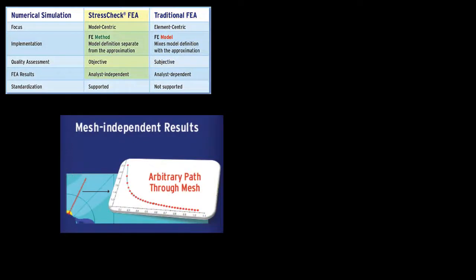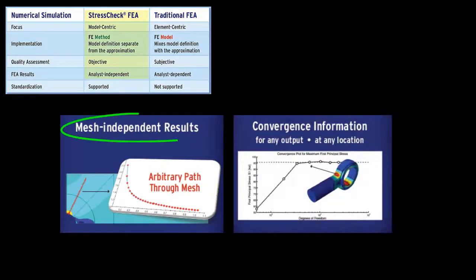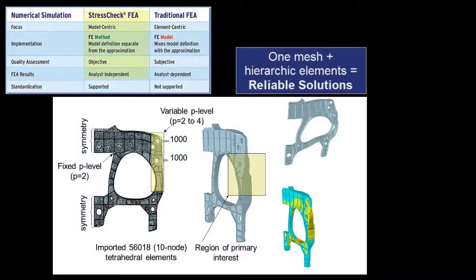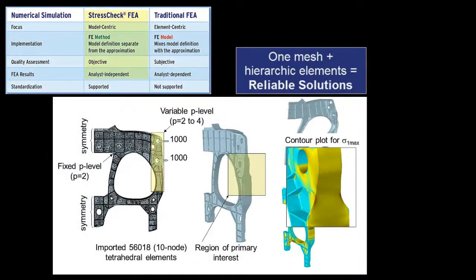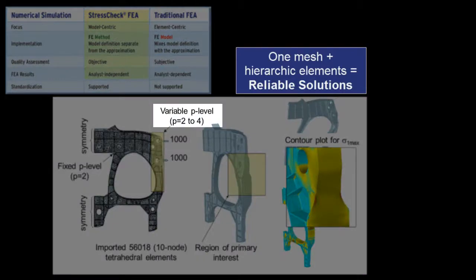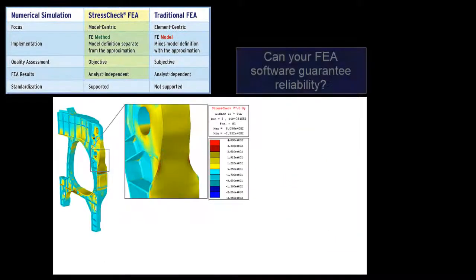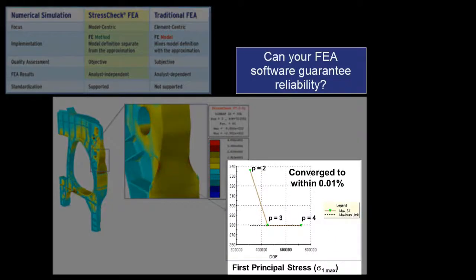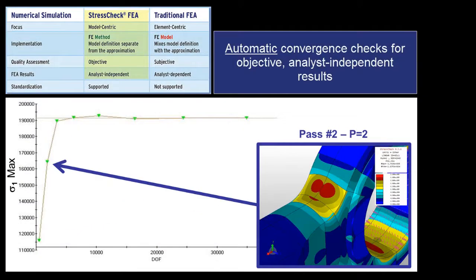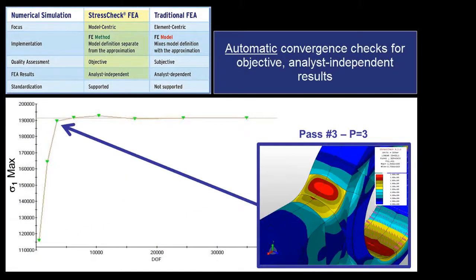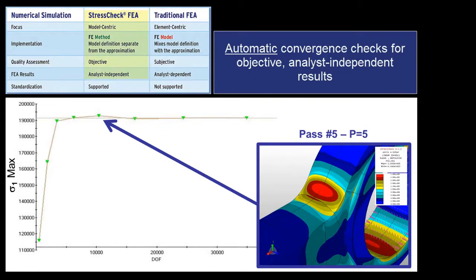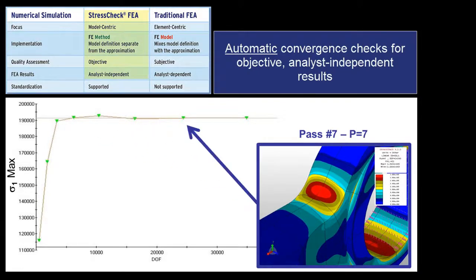With StressCheck, the reliability of the model's result is guaranteed. This is because of our unique ability to systematically increase the degrees of freedom of the model without changing the mesh, allowing for results verification. No other FEA tool can claim this level of quality assurance. Do you wish to know if 50 KSI is the right answer for your model? Just let StressCheck do the work and put your energy into the next task.